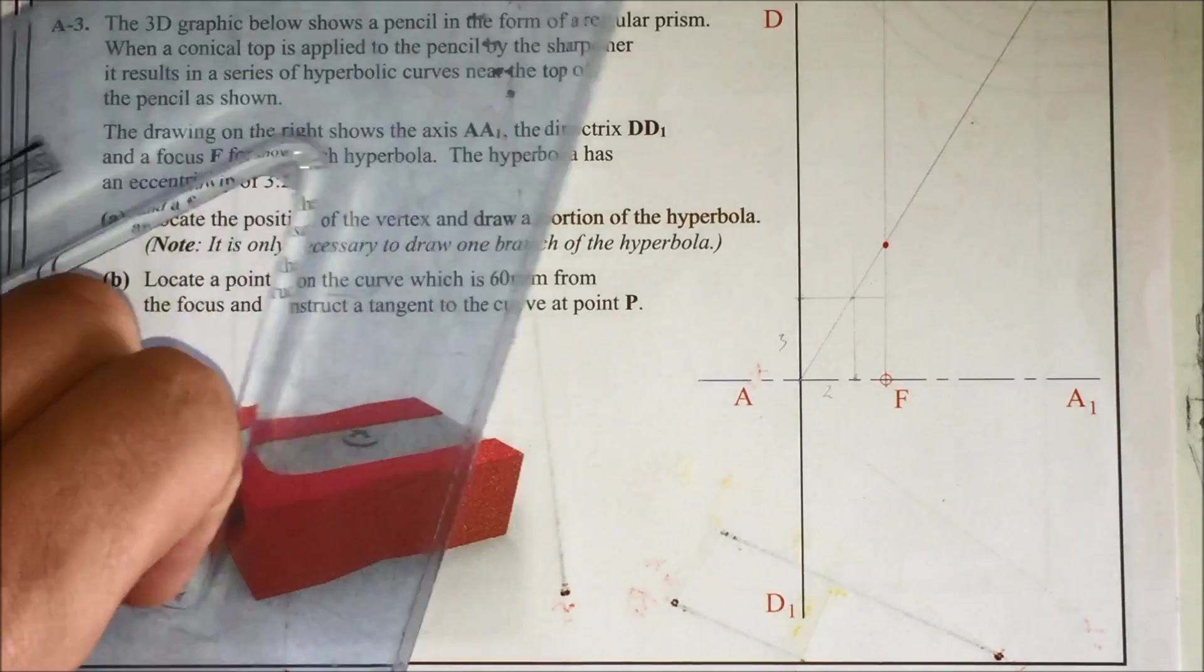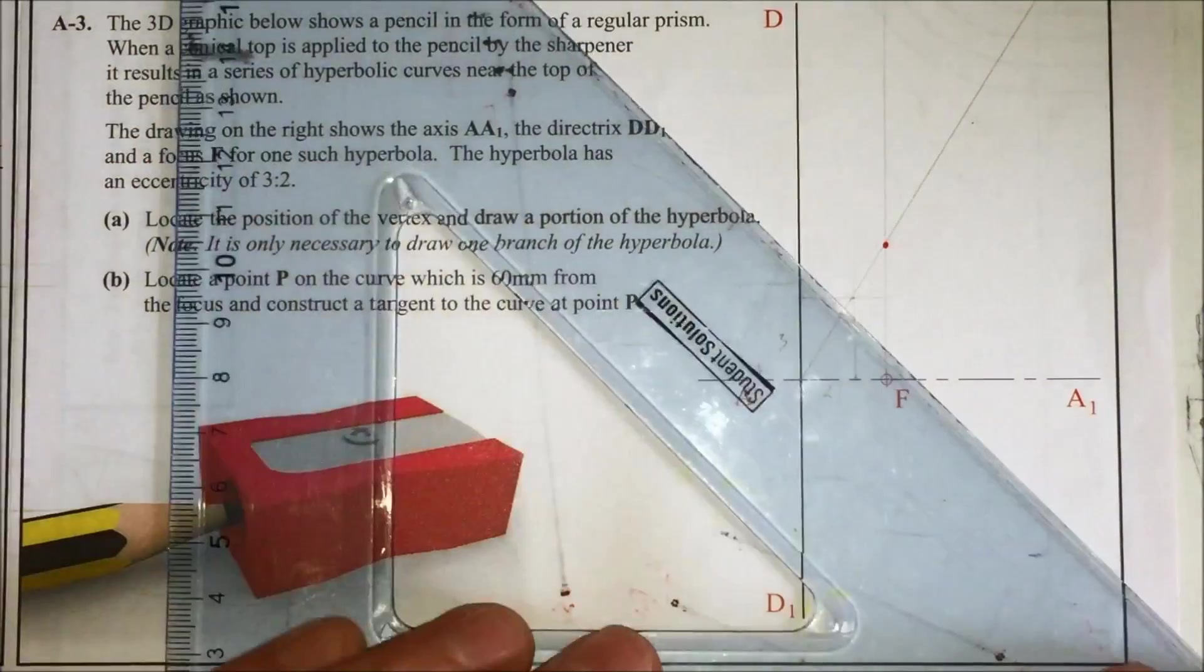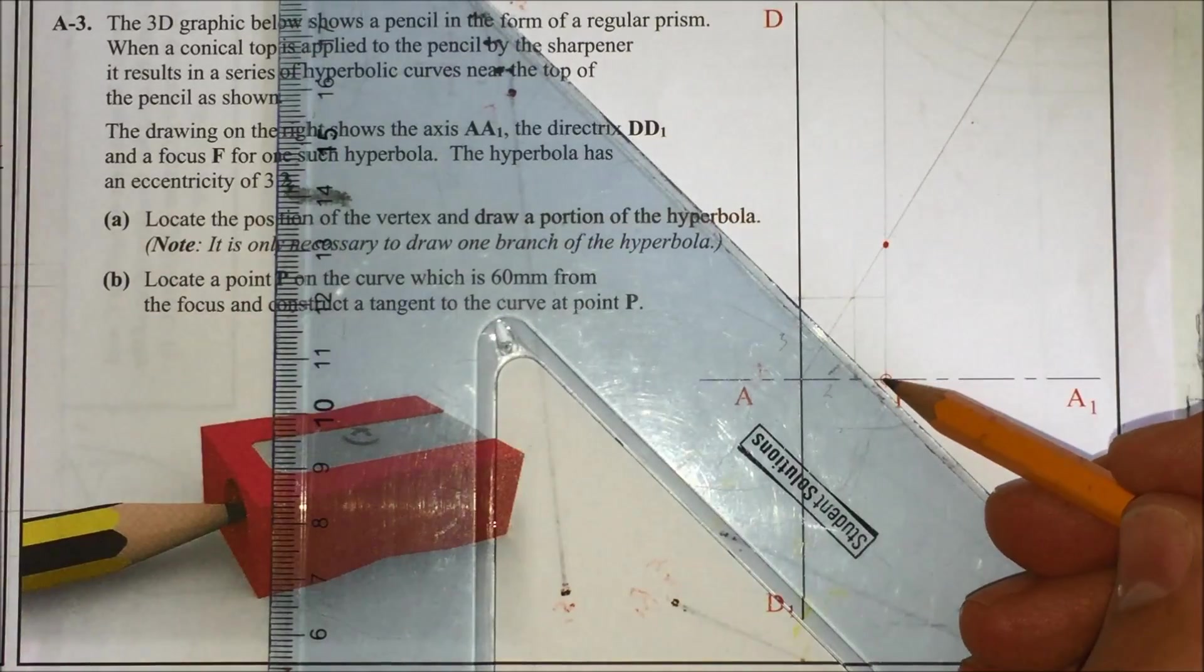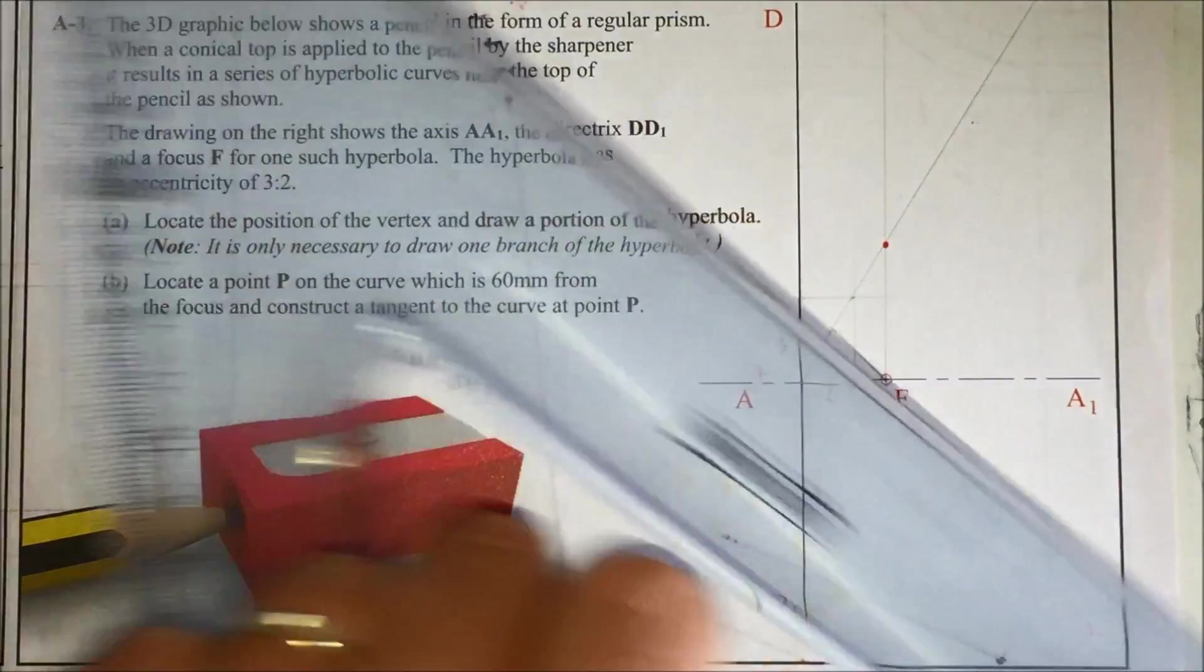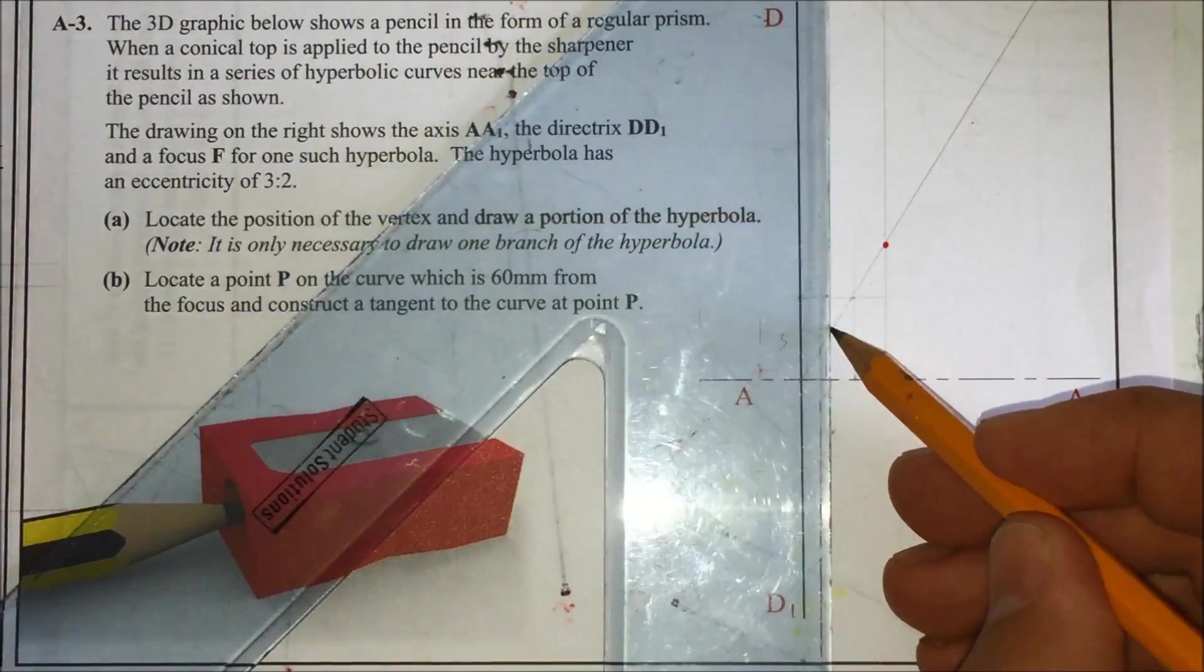To find the vertex, draw a 45 degree line from your focal point back till you hit the line of interest A1. And that will be directly above your vertex.